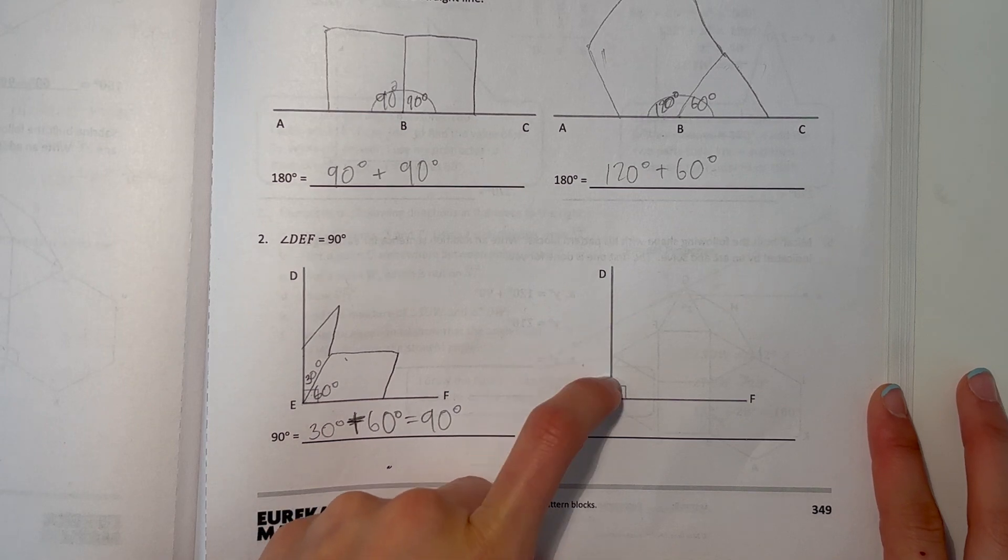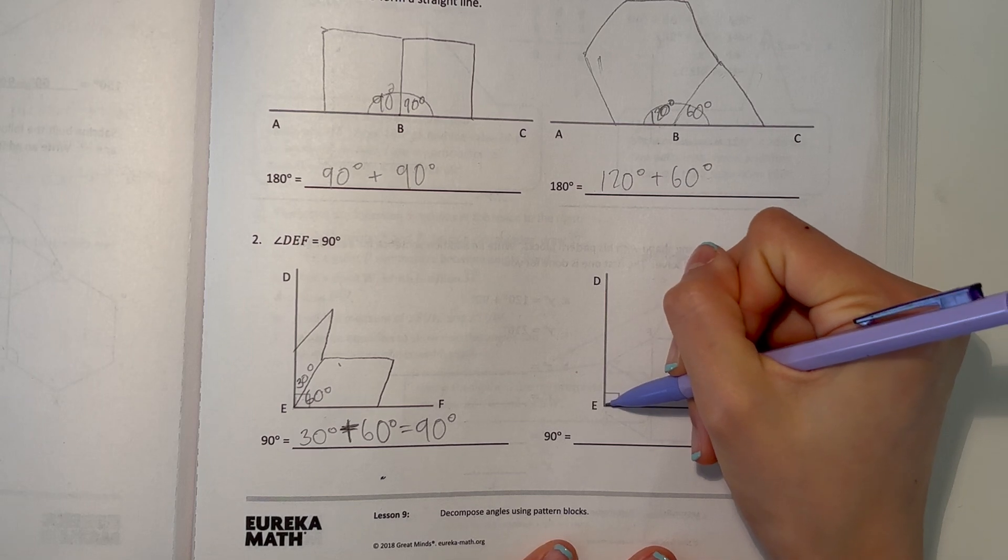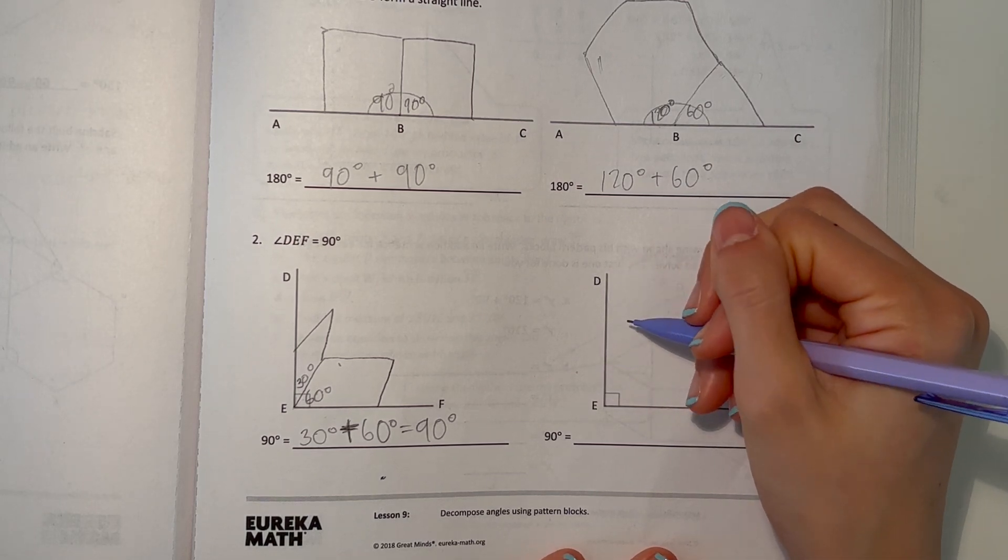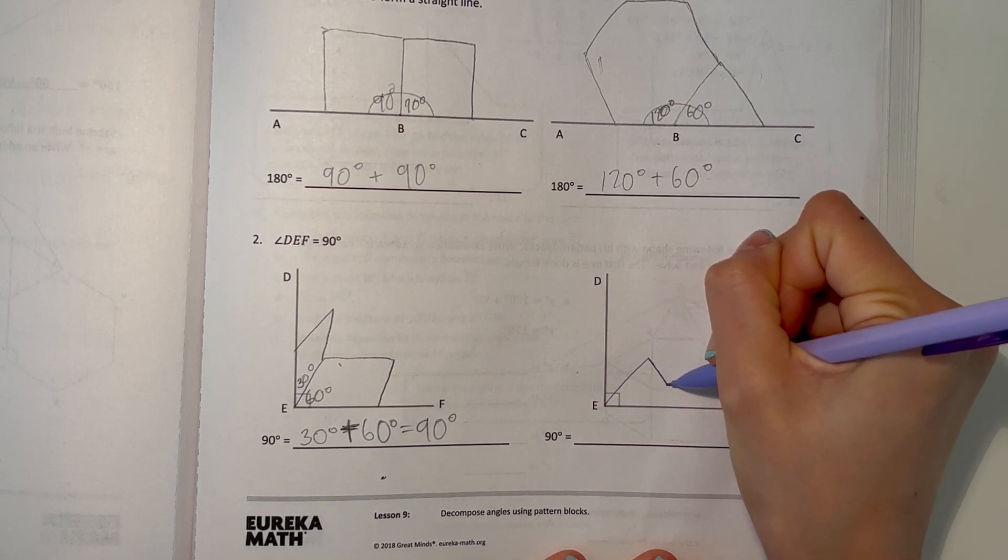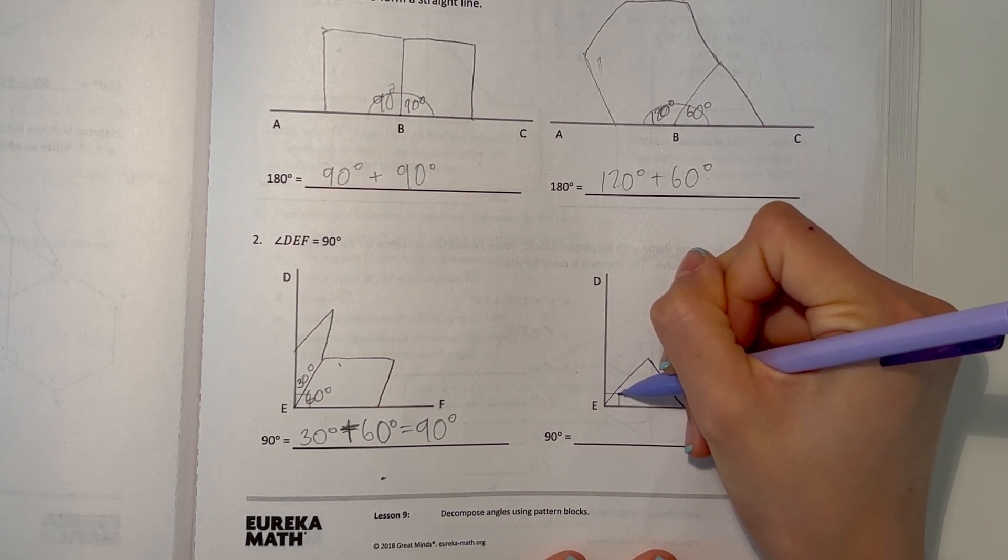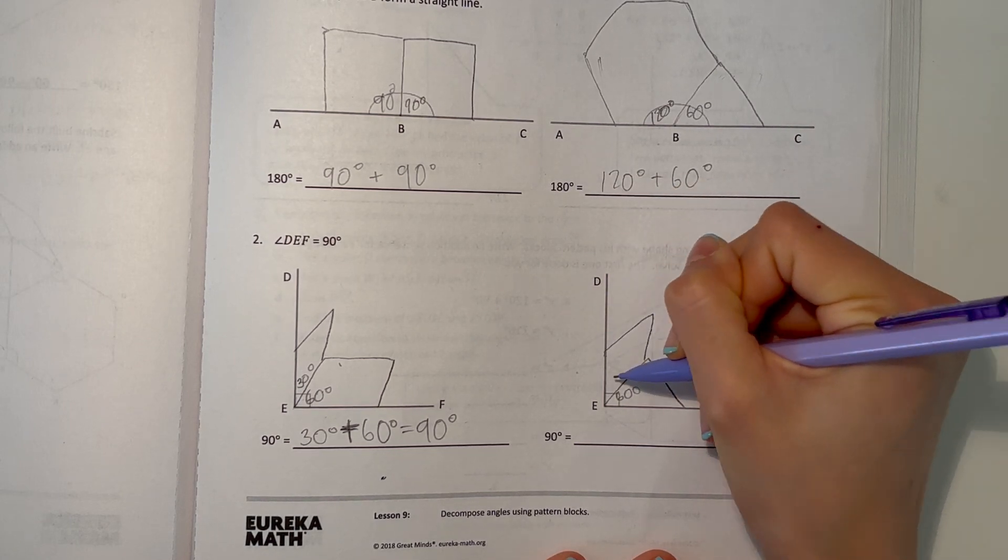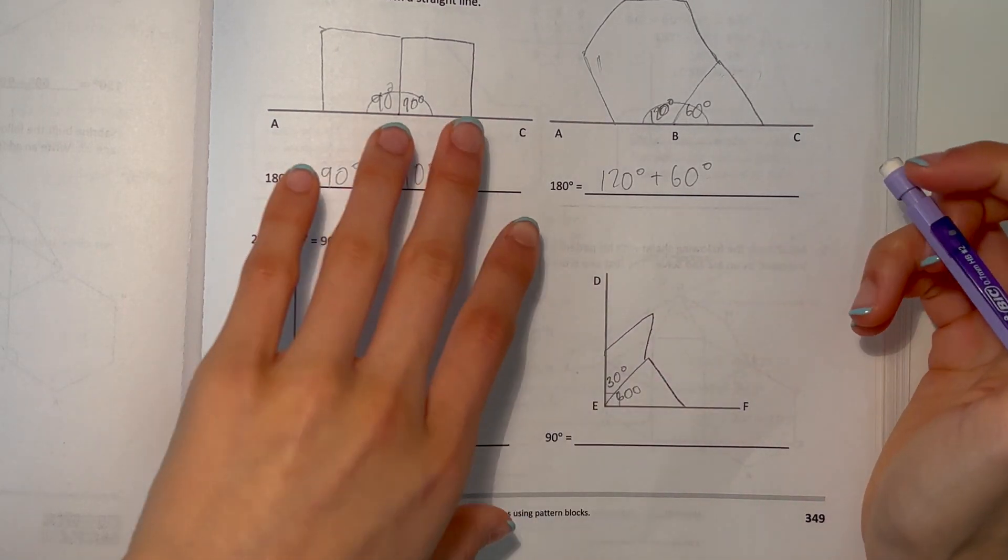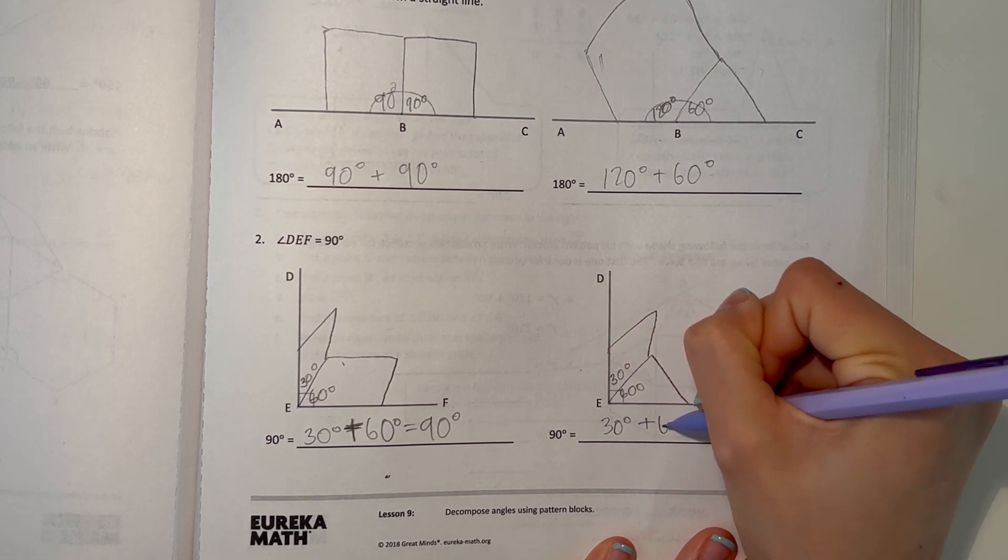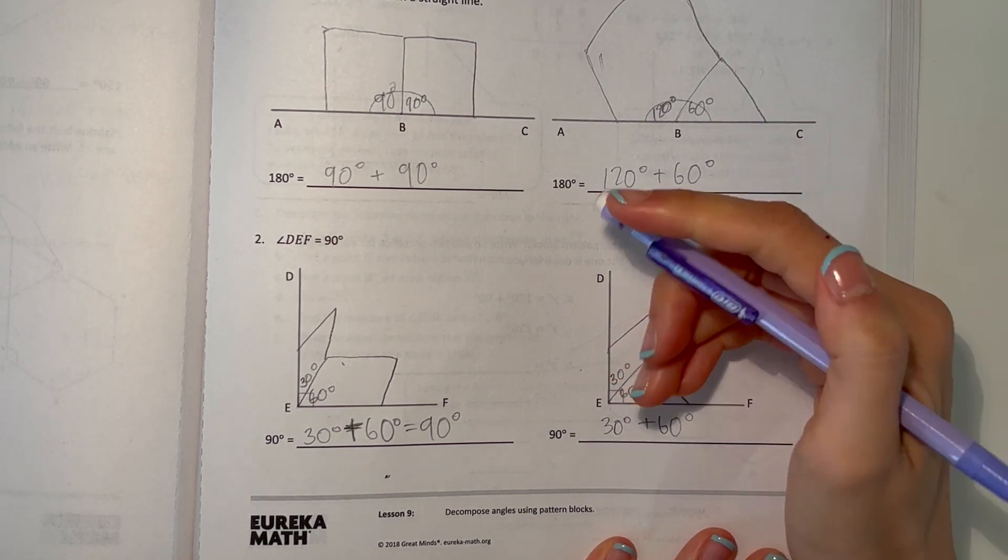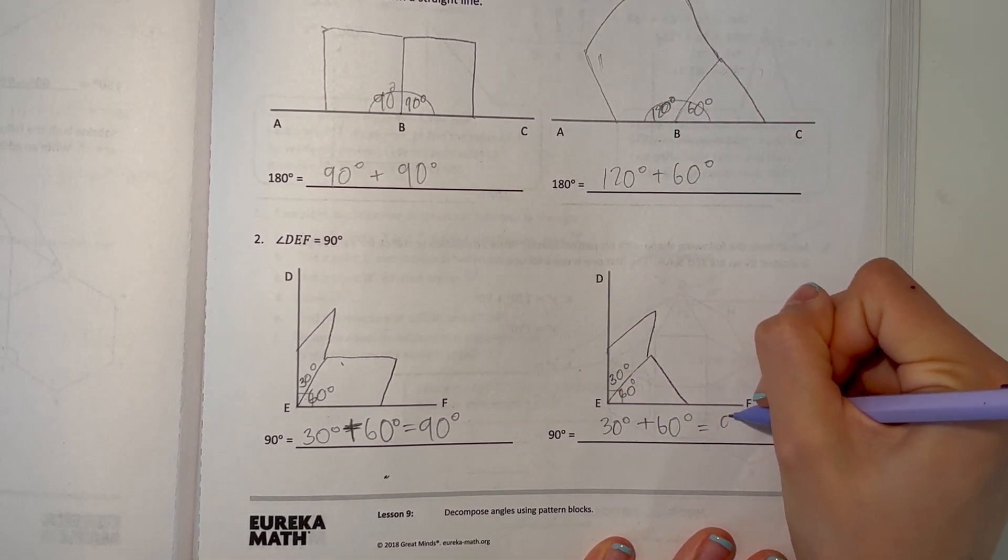And now over here, we can make 90 degrees again. We can do 30 and 60, but we can use it differently. Instead of the rhombus for 60 degrees, we can do the triangle at 60 degrees. And the parallelogram here will be 30 degrees. So 30 degrees plus 60 degrees equals 90 degrees.